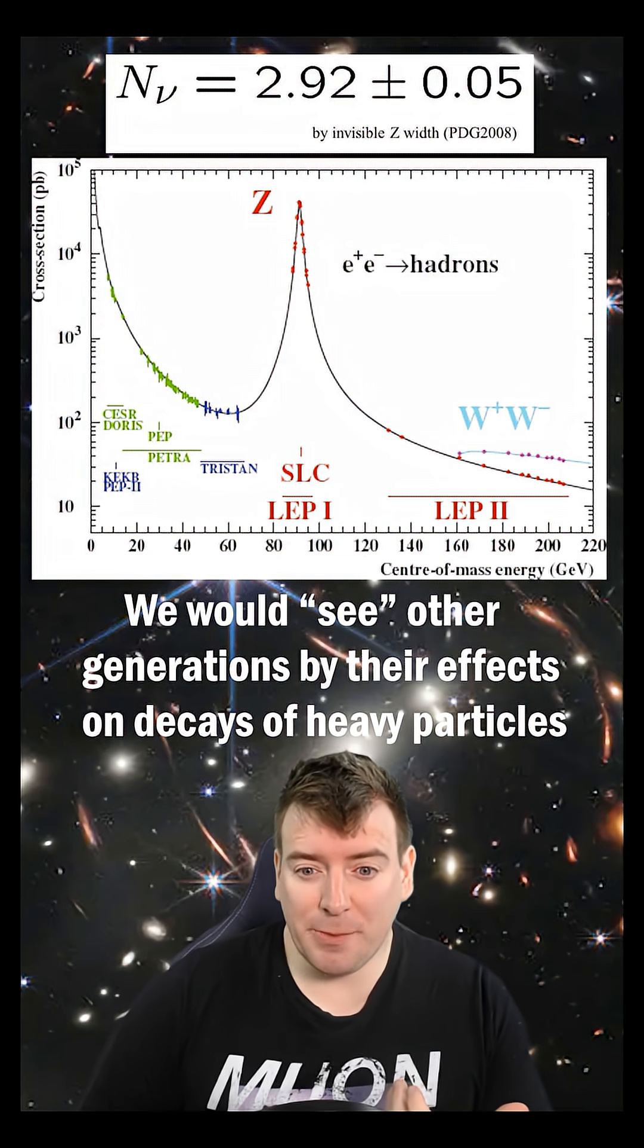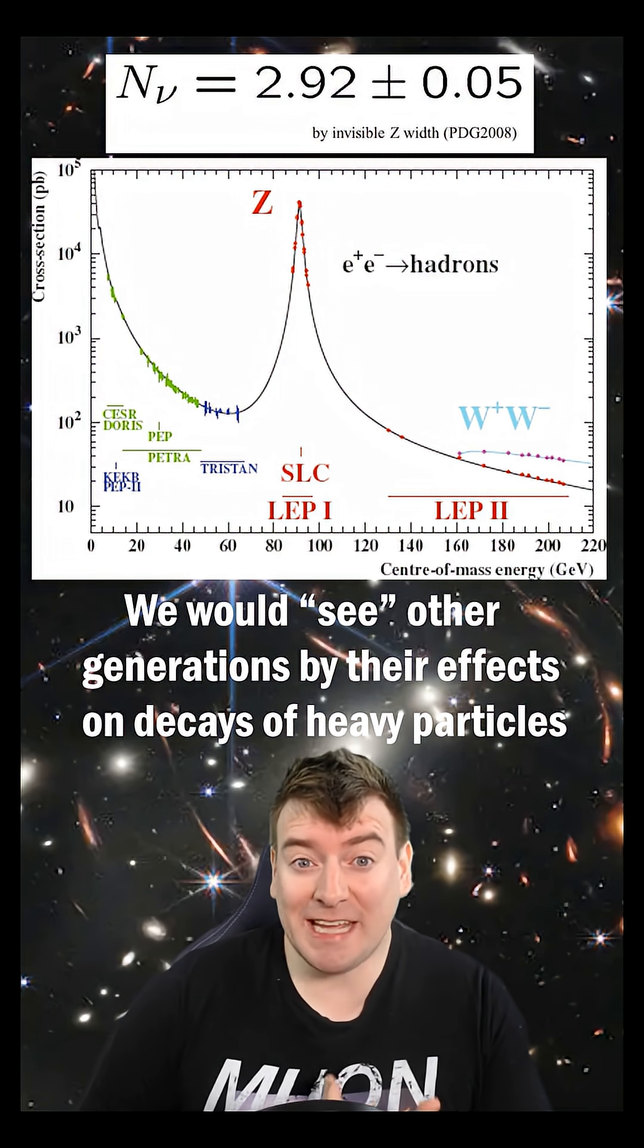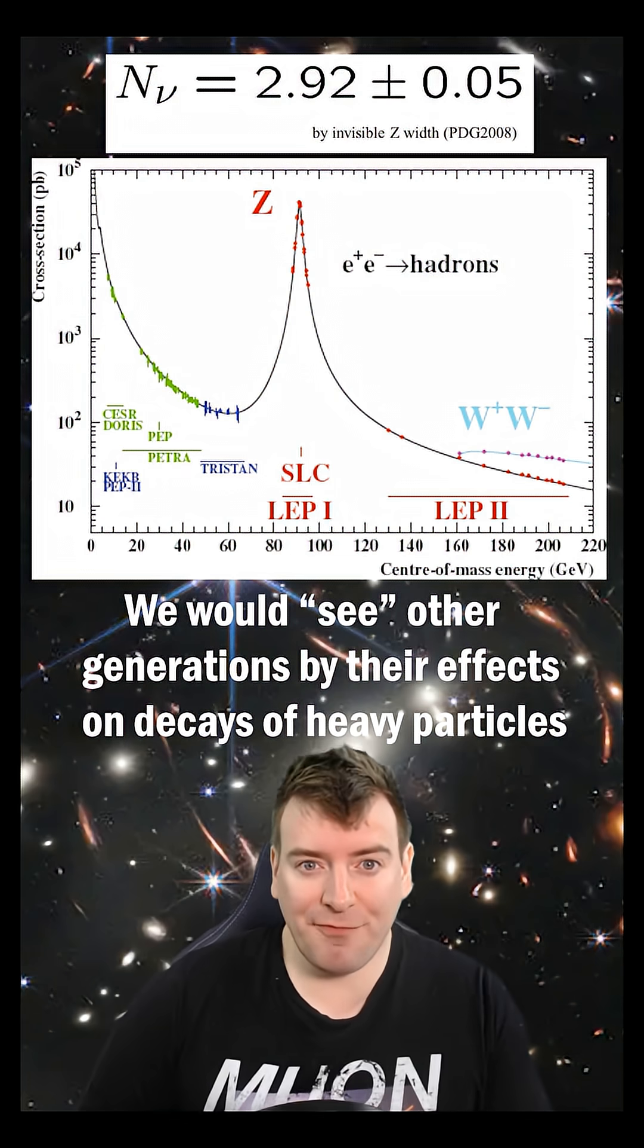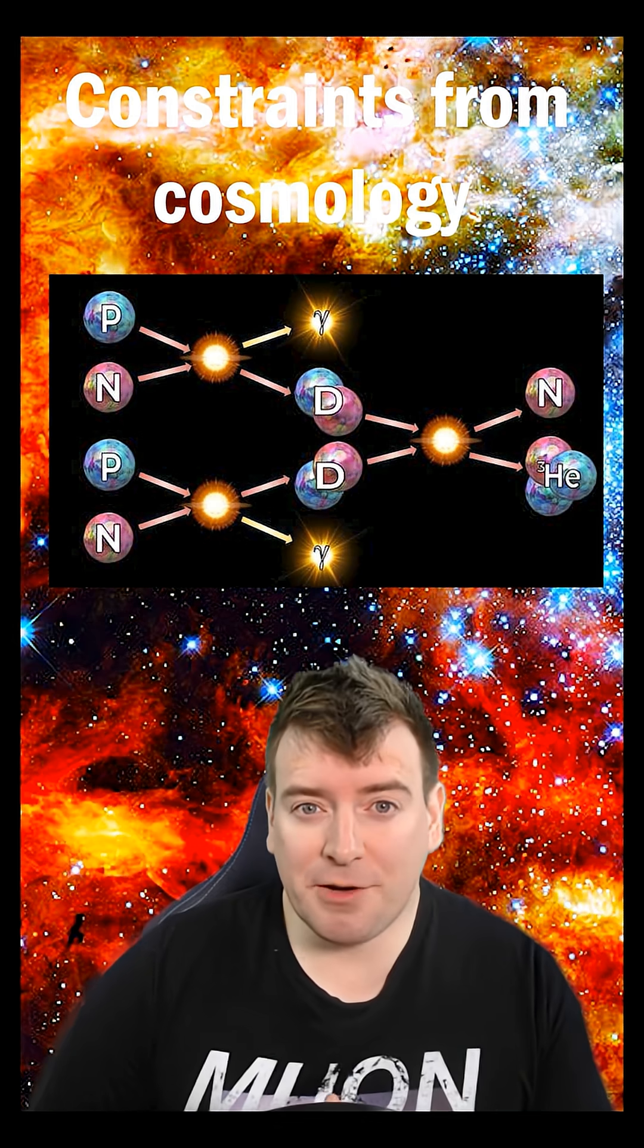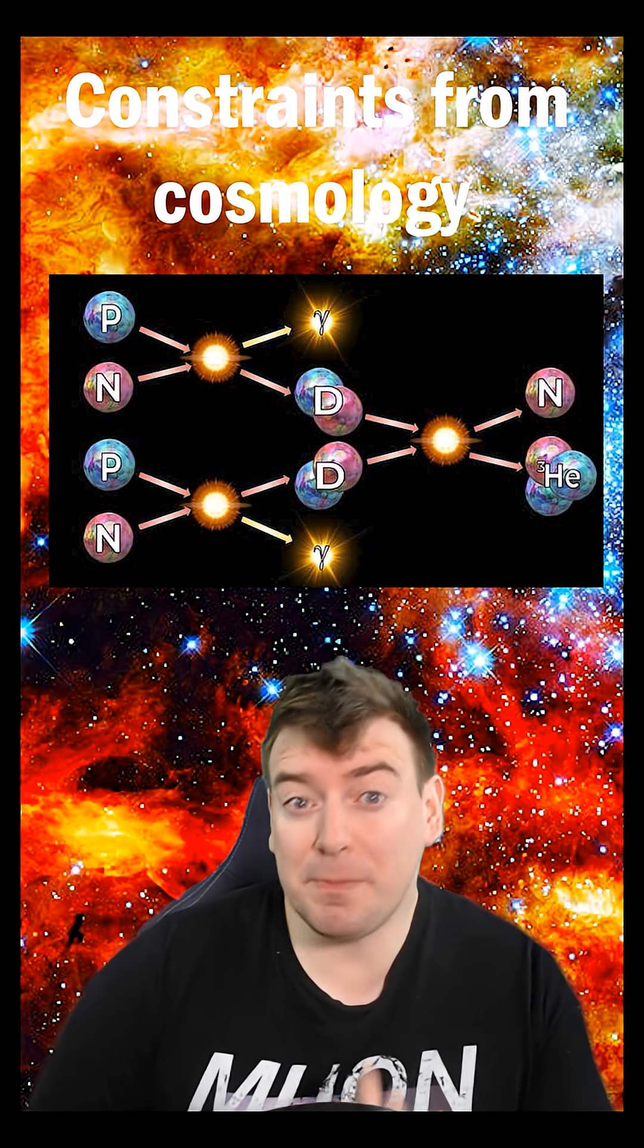If there were more light neutrinos that we haven't seen, heavier particles like the Z boson would be able to decay into them and would decay away faster than we observe. The rate of helium generation during the Big Bang also constrains the number of light neutrinos to be roughly three.